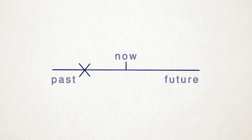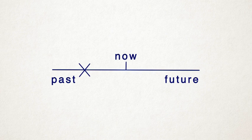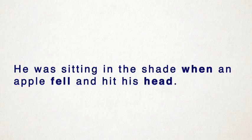For an action that happened at a particular moment in the past, we use the past simple. We often use when with this tense. He was sitting in the shade, when an apple fell and hit his head.